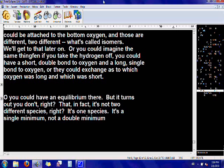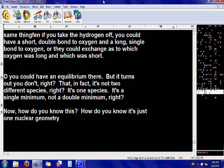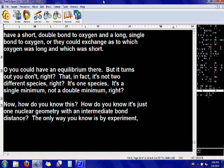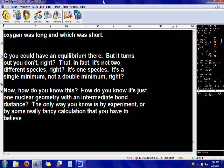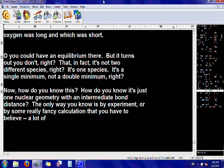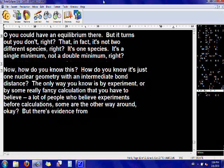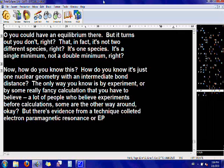Now, how do you know this? How do you know it's just one nuclear geometry with an intermediate bond distance? The only way you know is by experiment, or by some really fancy calculation that you have to believe. A lot of people would believe experiments before calculations. Some are the other way around. But there's evidence from a technique called electron paramagnetic resonance, or EPR, that shows that indeed, this is one species, a single minimum.